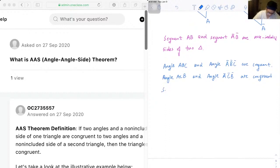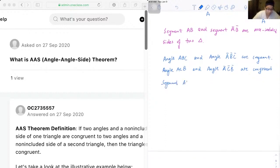And lastly, we have segment AB and segment A bar B bar are congruent.